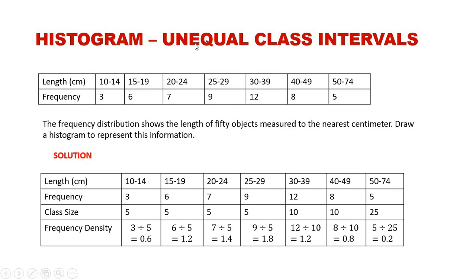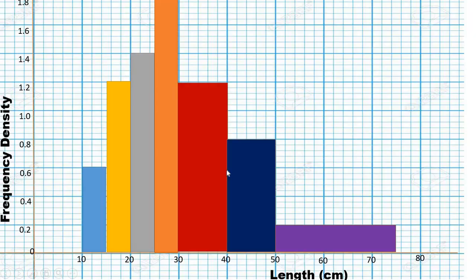Because these are unequal class intervals, we need to find the frequency density. Frequency density is the ratio of frequency to class size. The values are: 0.6, 1.2, 1.4, 1.8, 1.2, 0.8, and 0.2 for the respective class intervals.